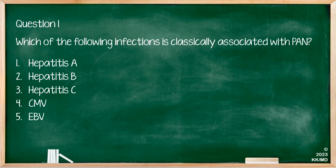Let's do some questions. Which of the following infections is classically associated with PAN? One: hepatitis A. Two: hepatitis B. Three: hepatitis C. Four: CMV. Five: EBV. If you recall, we have been mentioning the classic association between hepatitis B and PAN. Therefore, the correct option is number two.